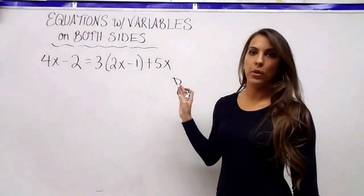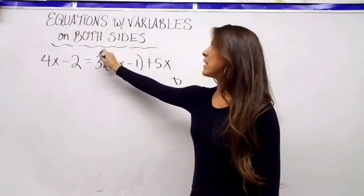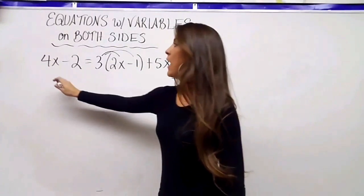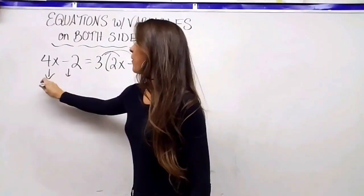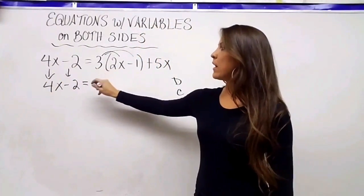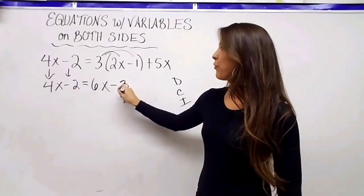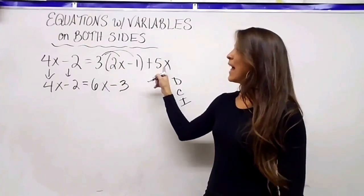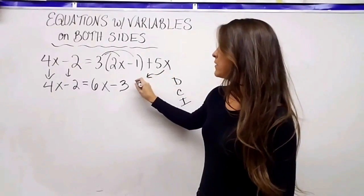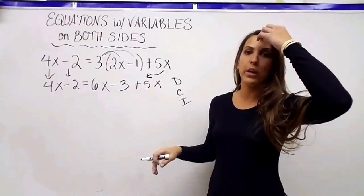The D stands for distribute. I like to get rid of anything I can distribute first. Looking at this equation, that 3 outside of the parentheses means it needs to be distributed. I bring down everything from the left side unchanged. On the right: 3 times 2x is 6x, 3 times negative 1 is negative 3, and the 5x is not in parentheses so it just comes down as plus 5x.